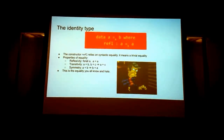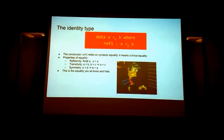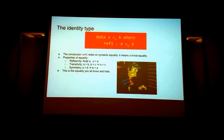The identity type: this is how the identity type is defined in intensional Martin-Löf Type Theory, where you have a type A and to construct a value of A equals B, there's the reflexivity constructor, which is of type A equals A. It means trivial equality — purely syntactical equality where you check each bit of the representation.